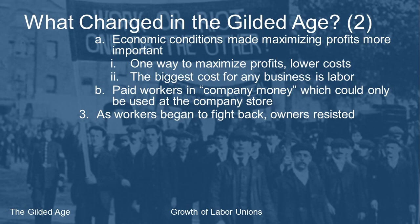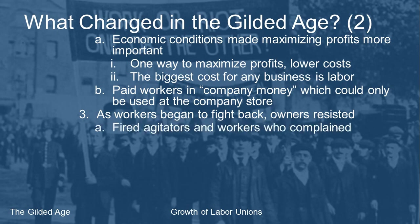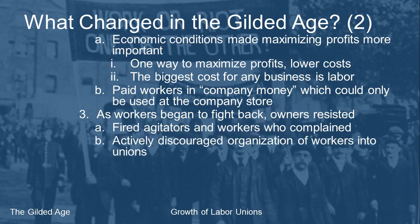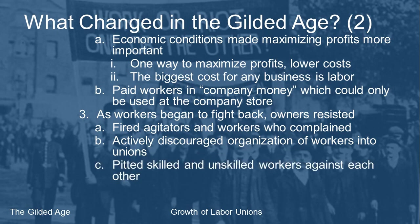As conditions worsened, workers fought back — and of course they did. When they fought back, owners resisted. They would fire people who complained and fire labor agitators, doing whatever they could to discourage the formation of unions. In many cases employers pitted workers against each other — divide and conquer. If you can get them fighting amongst each other, your job of beating the whole group is a lot easier.